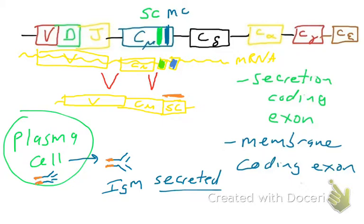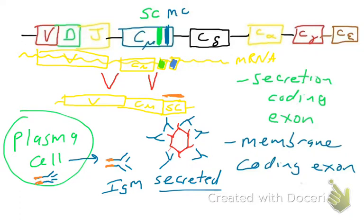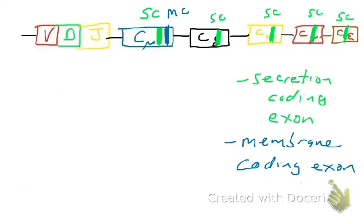So this IgM molecule is not embedded in the membrane — it is secreted into the extracellular fluid. The cell has gone from having membrane-bound IgM to secreting IgM. That's what a plasma cell does. This secreted IgM will go and bind a pathogen and do the things that IgM does, such as activate complement. How does a cell go from making membrane-bound to secreting antibody? It's all about alternative splicing.